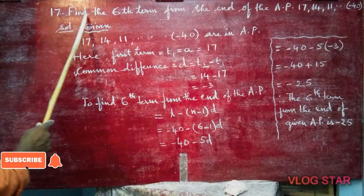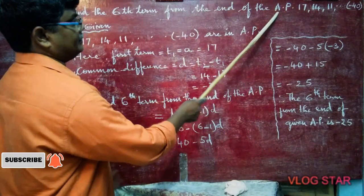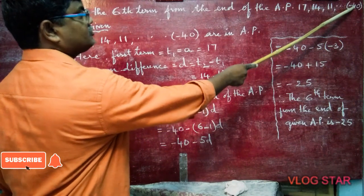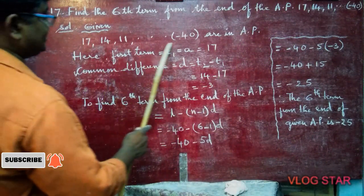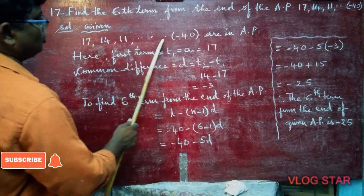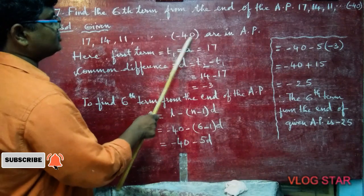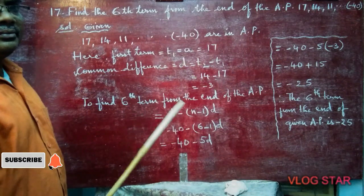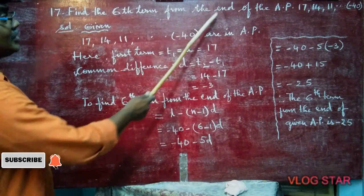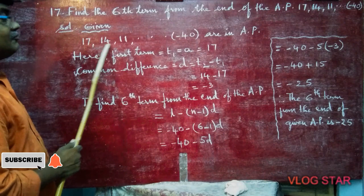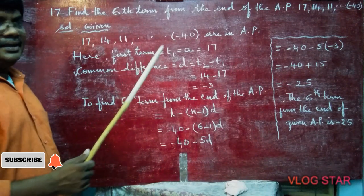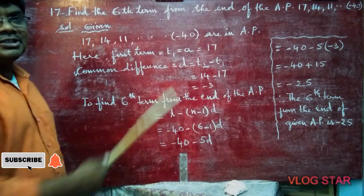Problem 17. Find the 6th term from the end of the AP: 17, 14, 11, ..., minus 40. Solution: The AP is 17, 14, 11, ... and the last term is minus 40. They are in AP, meaning the common difference is the same. They are asking for the 6th term from the end — that means counting from the back. Listen carefully: if asked from the front it's straightforward as T6, but here it is from the end.